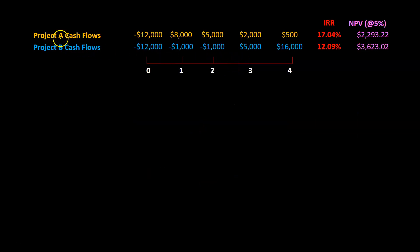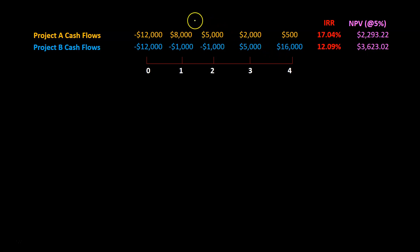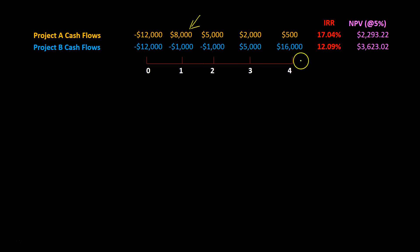Consider the situation where you have two projects, A and B. They both require the same amount of initial investment, but they differ with respect to the timing of their cash inflows. Project A is yielding high cash inflows earlier on in its life, whereas project B has cash outflows in the first couple of years but then has cash inflows occurring later in its life.